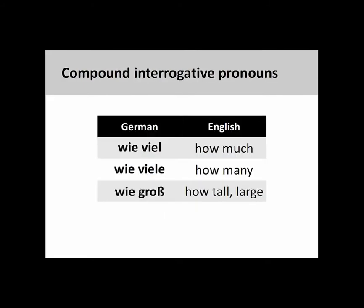Interrogative pronouns can also inquire about the quantity, number, and characteristics of a noun. 'Wie viel' (how much), 'wie viele' (how many), and 'wie groß' (how tall/large) — these interrogative pronouns usually appear in compound forms. Since these pronouns appear directly before a noun, they are sometimes also called interrogative adjectives.